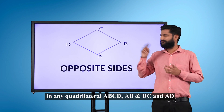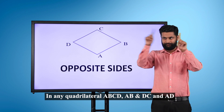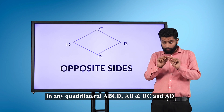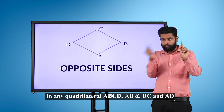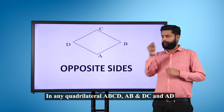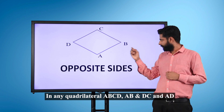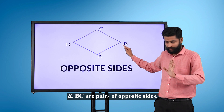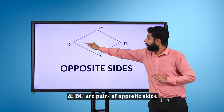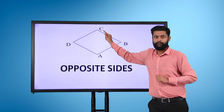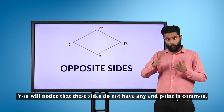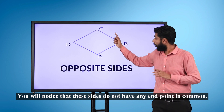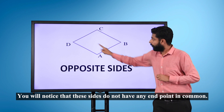In any quadrilateral A, B, C, D, AB and DC, and AD and BC are pairs of opposite sides. You will notice that these sides do not have any end point in common.